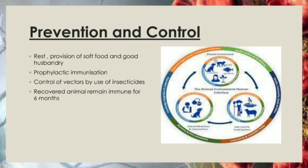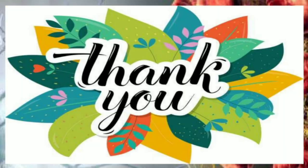For prevention and control: grazing of animals should be avoided in areas where there are lots of vectors. Provision of soft food and good husbandry practices is recommended. Control of vectors by use of insecticides is important. Recovered animals are immune for six months, and quarantine of sick animals should be enforced.